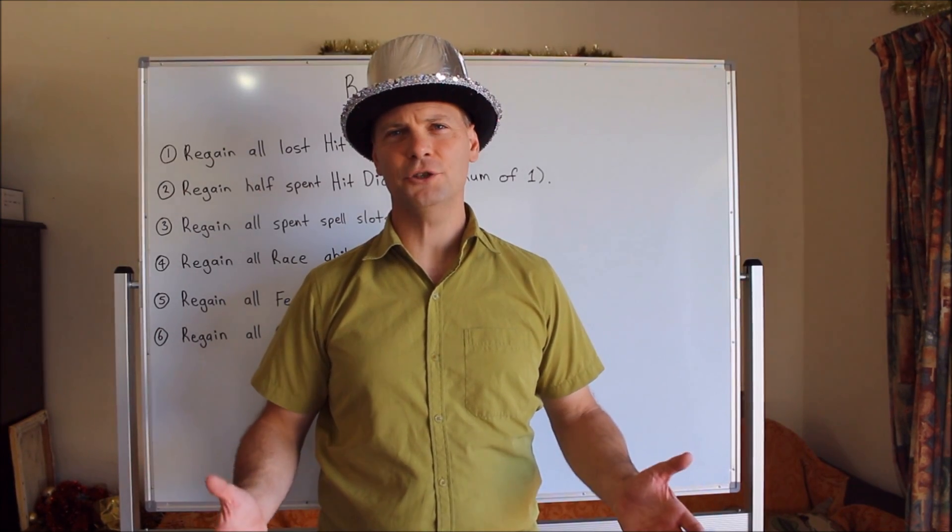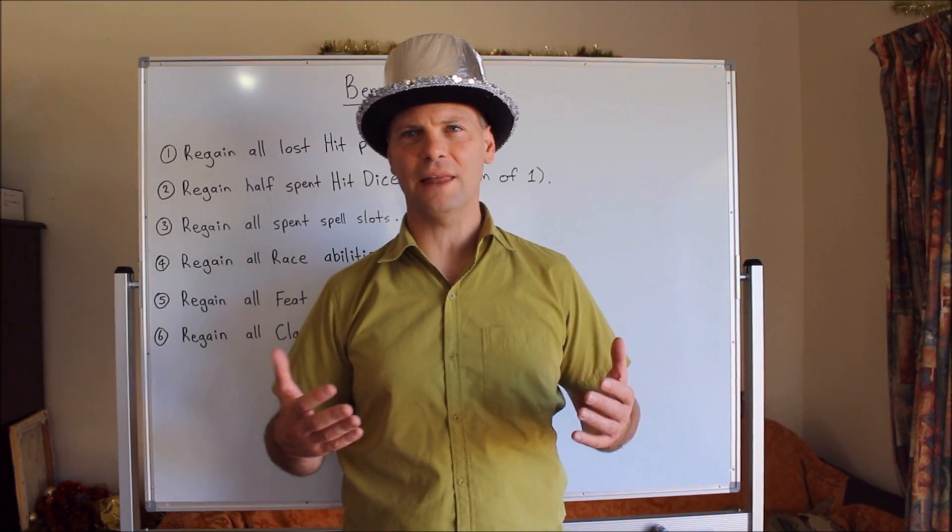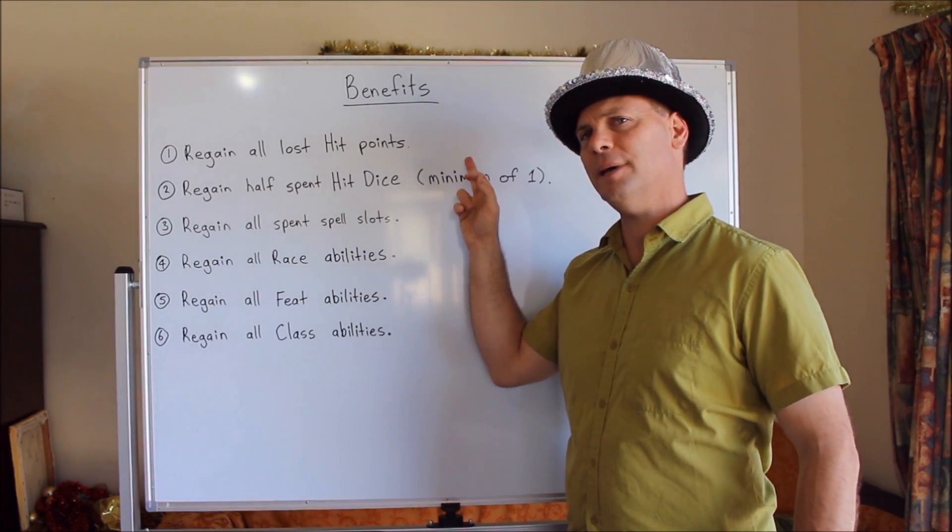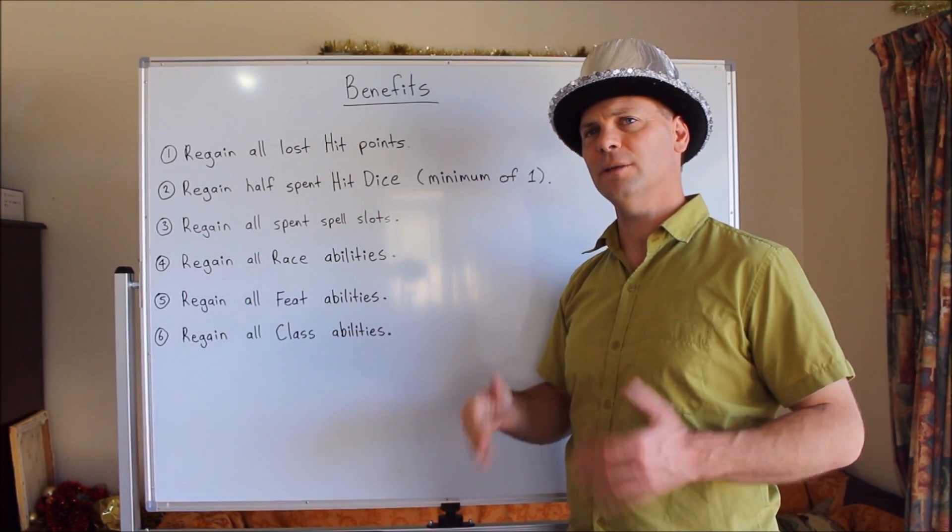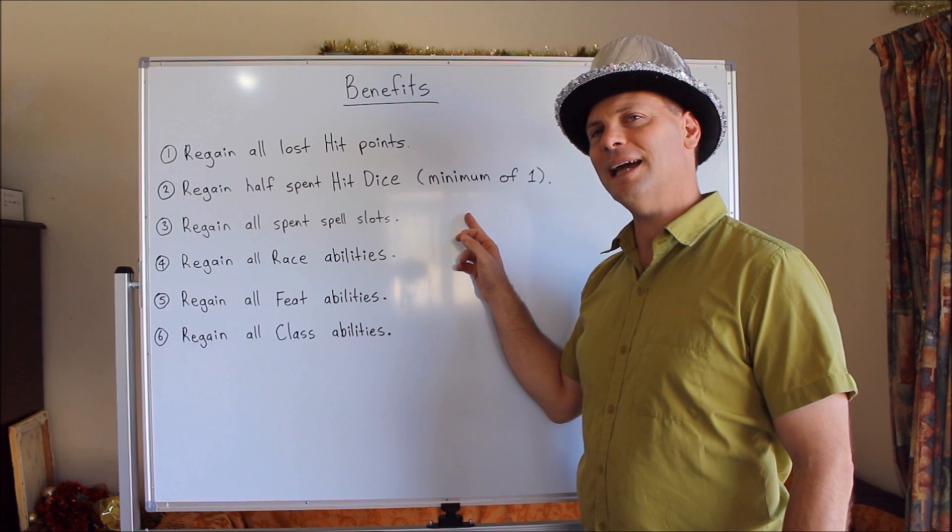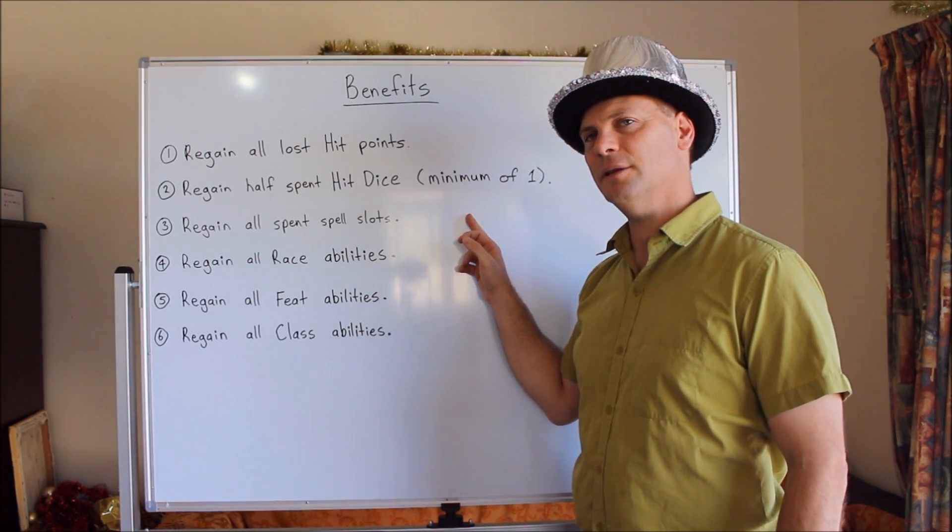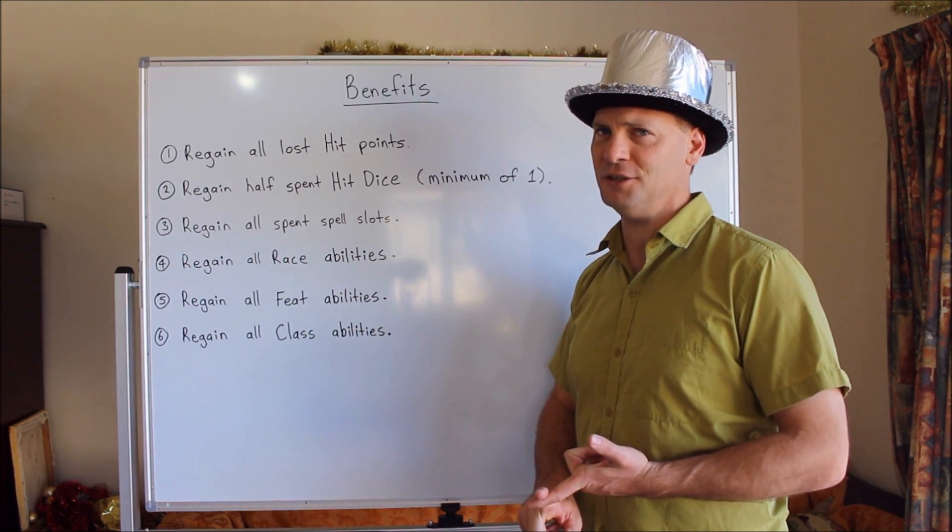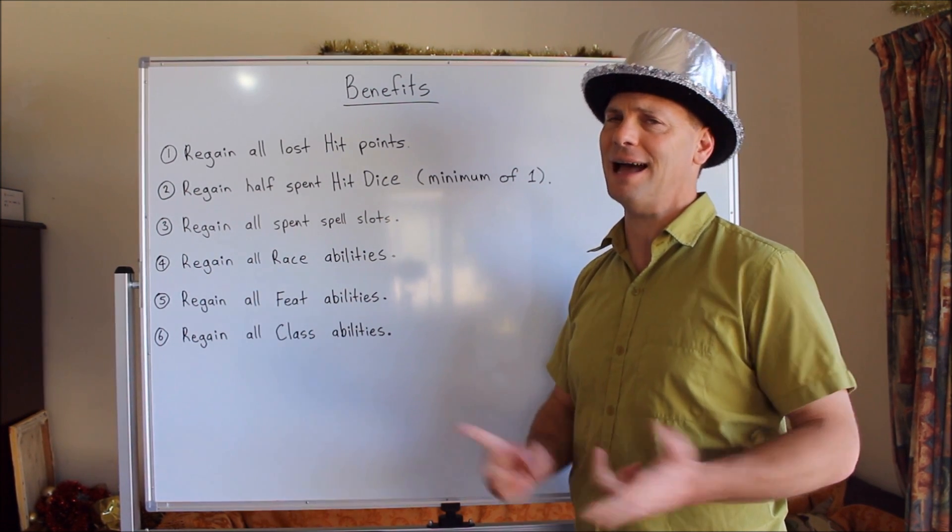At the end of a long rest you're going to have a whole lot of benefits. So what are they? Well the first one is you're going to get all of your hit points back. Any that you've lost you get them all back. You're going to regain half of your spent hit dice. Now if you're level one that means you get one hit dice back not half a hit dice. You can't get back half a hit dice.